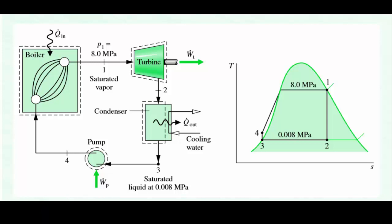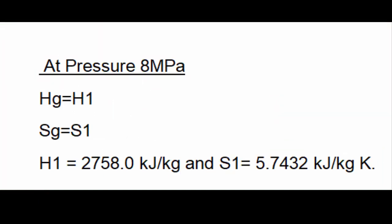As shown in the diagram, there is the layout and its graphical representation in T-S diagram. The constants are given as: the pressure is 8 megapascal at stage 1 and at stage 2 the pressure is 0.008 megapascal. So we start to solve this problem. First we will calculate the enthalpies.